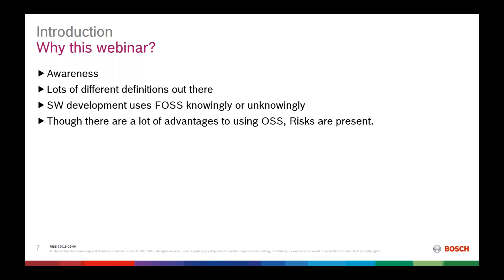A plausible example in today's world could be a vulnerability existing in an OSS component used in a ride-hailing app like Uber. If personal identifying information is available within such applications, attackers could potentially discover the location and destination of people they'd like to target. We are facing real risks when using open source. There are also legal lawsuits that can happen if non-compliance obligations are not met while using OSS components.